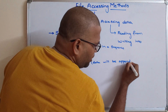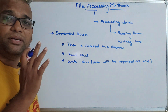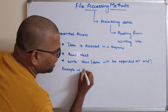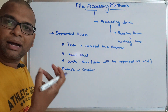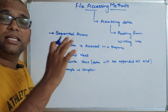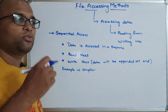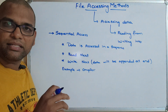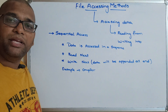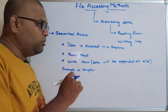Data will always be appended or written at the end. A good example of sequential access is our compilers. Whatever sequence we write the instructions in, the compiler executes them in that same order. You might know C, Python, or Java — the default control flow is sequential access, meaning instructions are written and executed in the same order.